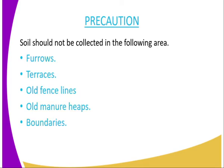Then we have precautions. What are the precautions to consider when collecting soil from the field? You should avoid collecting soil from the following regions, because these regions contain highly fertile soils and can give misleading information about the soil fertility of the entire field. The first place to avoid is furrow areas; second, terraces; third, old fence lines, especially live fences, because leaves fall and after decomposing they add a lot of nutrients to the soil around that region.